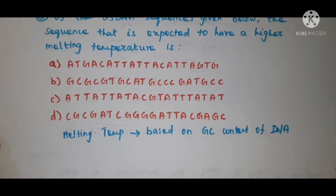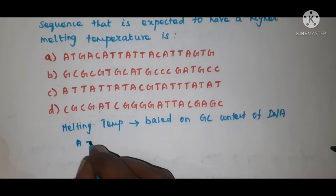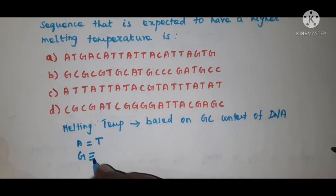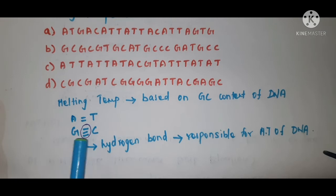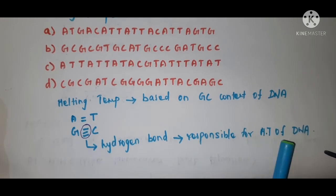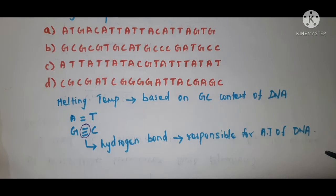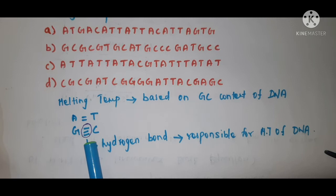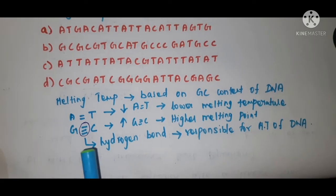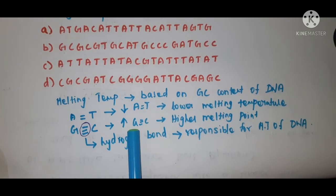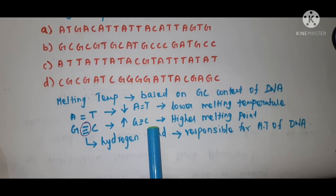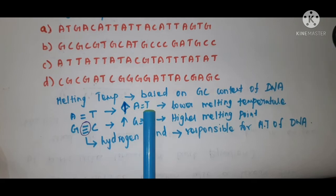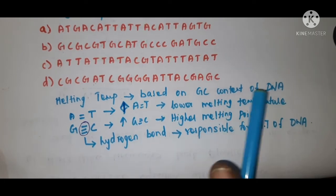That means your adenine is always base paired with thymine and guanine is always base paired with cytosine, and these hydrogen bonds are responsible for the melting temperature of DNA. The increased hydrogen bonding within a strand of DNA will increase the melting point. So, the DNA sequence with more GC base pairs will have the higher melting temperature, and the DNA sequence with more AT base pairs will have lower melting temperature.